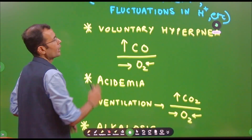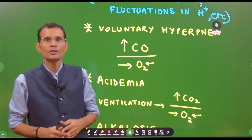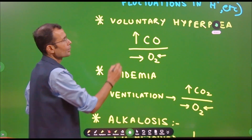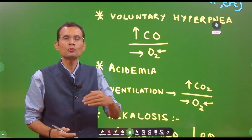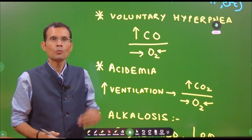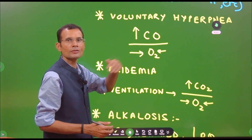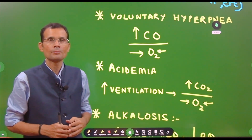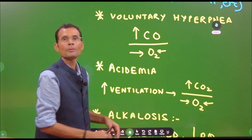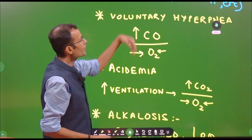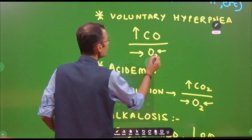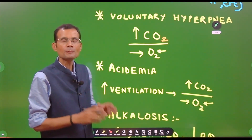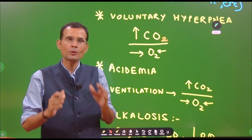Voluntary hyperpnea: if there is voluntary hyperpnea, more and more CO2 will be expelled out of the alveoli. More CO2 will diffuse from blood into the alveolus and be liberated without a corresponding rise in O2 consumption. There would not be a corresponding increase in the denominator — oxygen consumed — but there will be a rise in the CO2 being expelled out. Therefore, the respiratory quotient will increase.